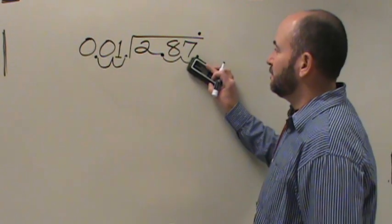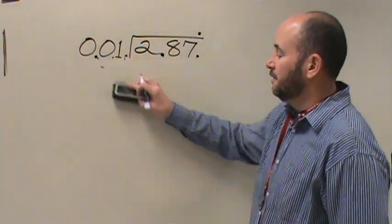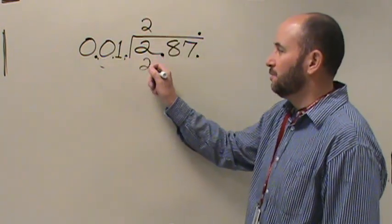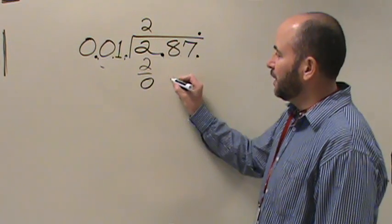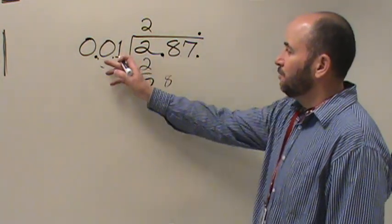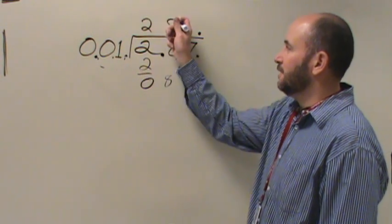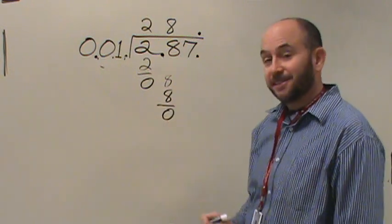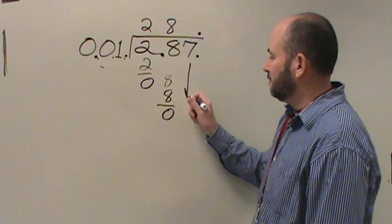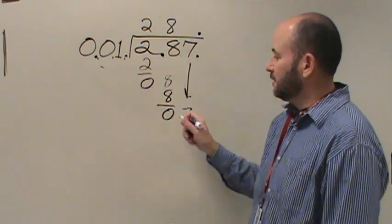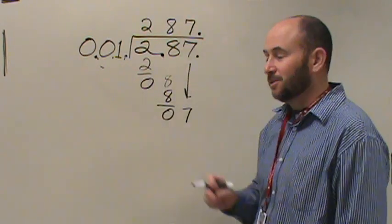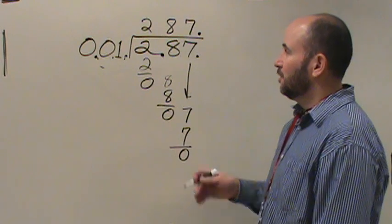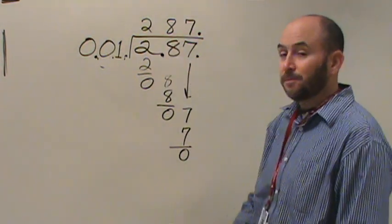Now all you're doing is dividing by 1. How many times can 1 go into 2? Twice. 2 times 1 is 2, subtract and you have 0. Bring down your 8. 1 into 8 goes 8 times. 8 times 1 is 8, subtract and you get 0. Bring down your 7. 1 into 7 goes 7 times. 7 times 1 is 7, with a remainder of 0, and it terminates. Your answer is the whole number 287.